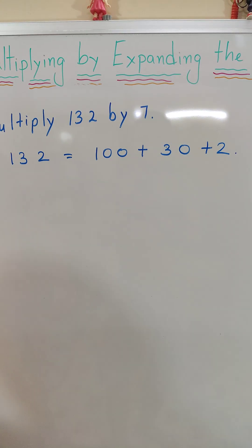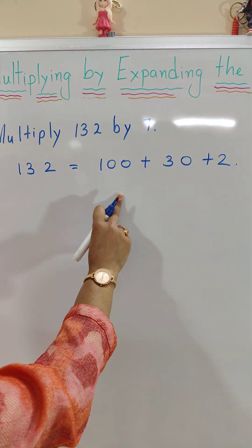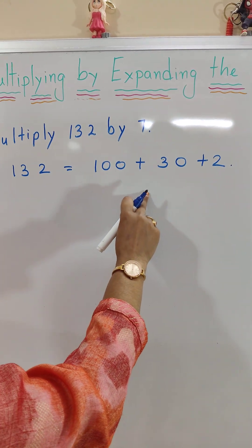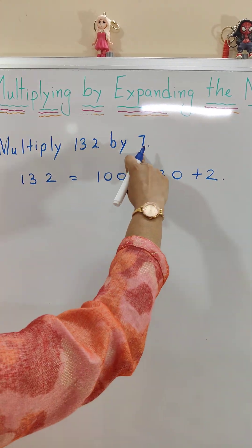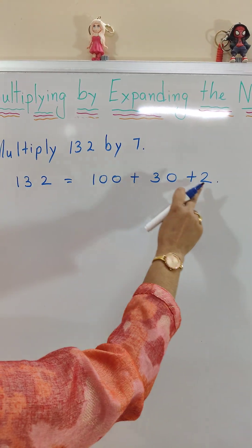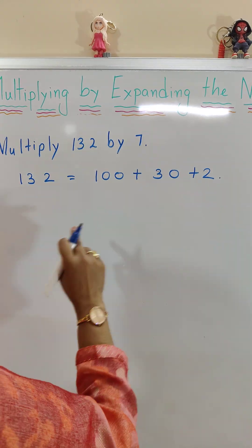Now multiply the expanded form of 132 by 7, which means 100 times 7, 30 times 7, 2 times 7. Let's do one by one.